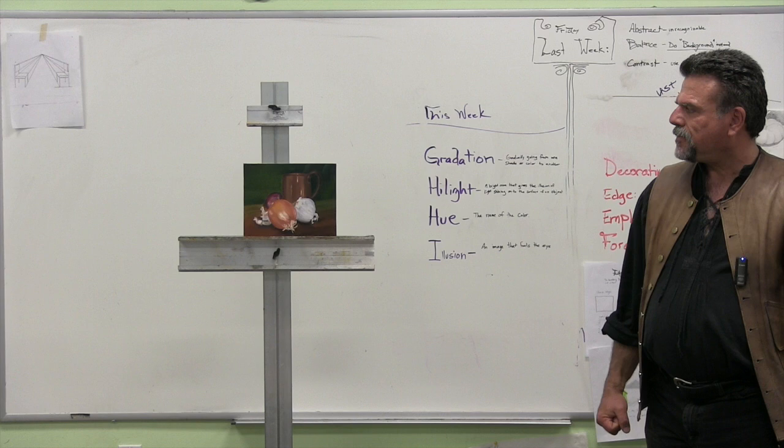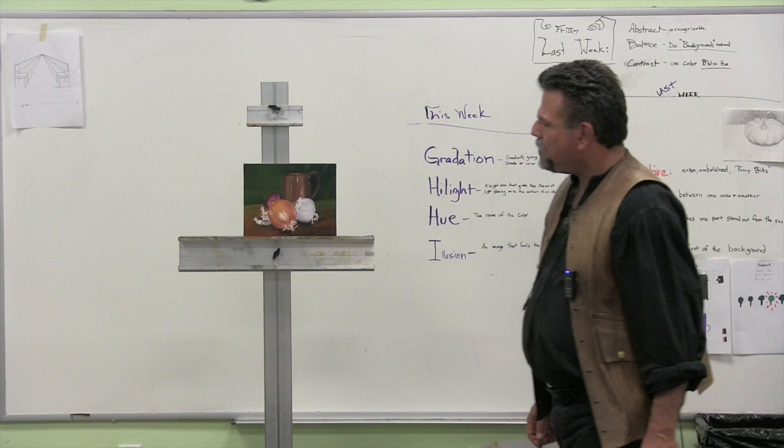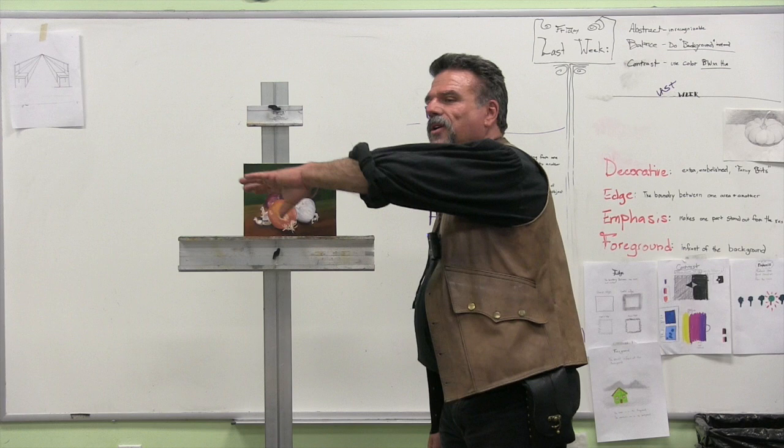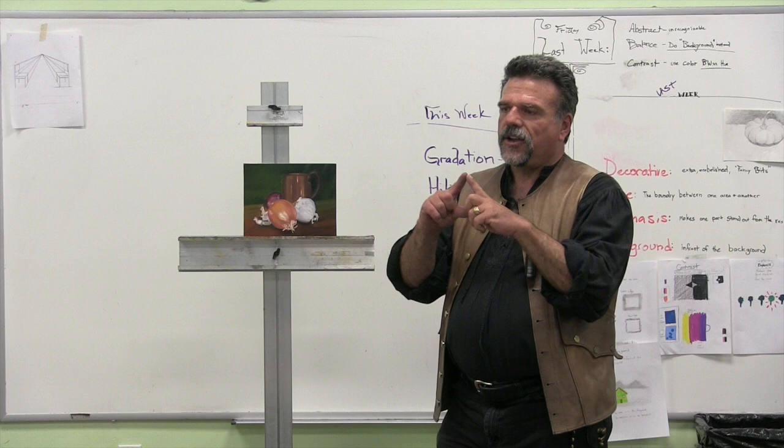So whose is this? Okay, so what we have here — the original homework assignment was to try to create depth. We have everything crowded in the middle. We could call this a triangular composition, like Leonardo da Vinci used.